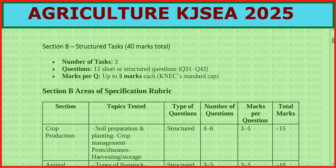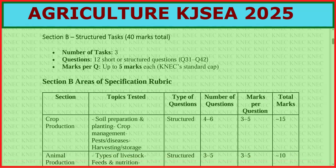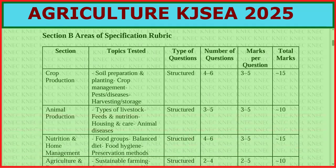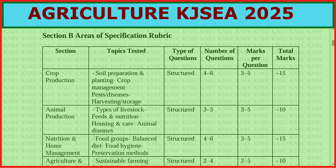Section B areas of specification: first is crop production, covering four to six questions with three to five marks per question. Look at soil preparation and planting, crop management, pest and disease, harvesting and storage — these are structured questions.